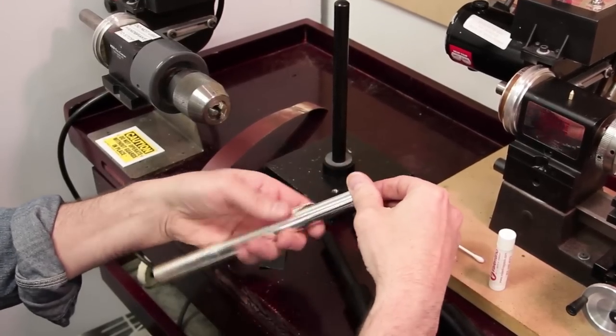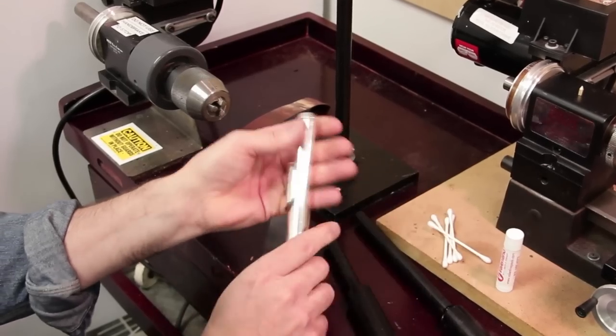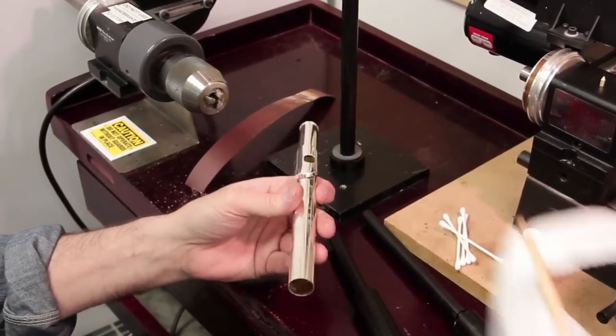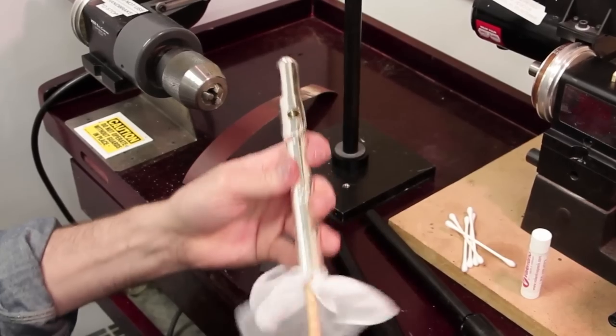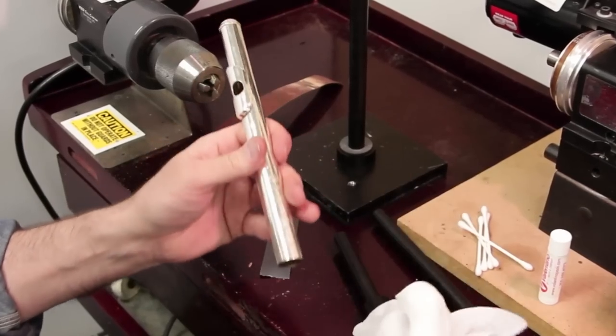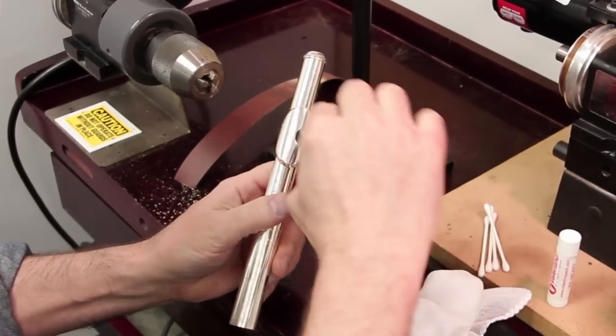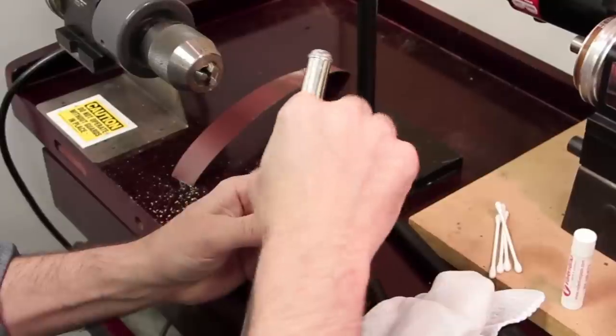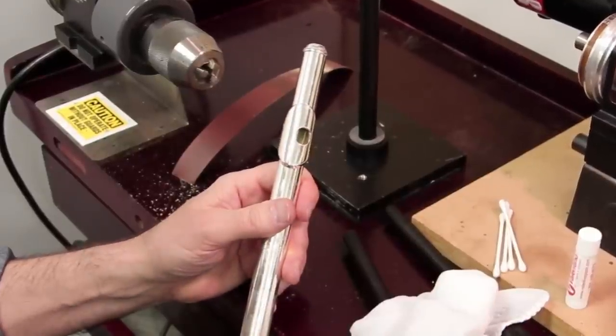For my last steps, I'll just put the crown back in place. Make sure that's nice and secure. And I'll swab out the head joint just to remove any residue of the cork grease. I'll also clean the embouchure hole with a q-tip swab. And we're done.